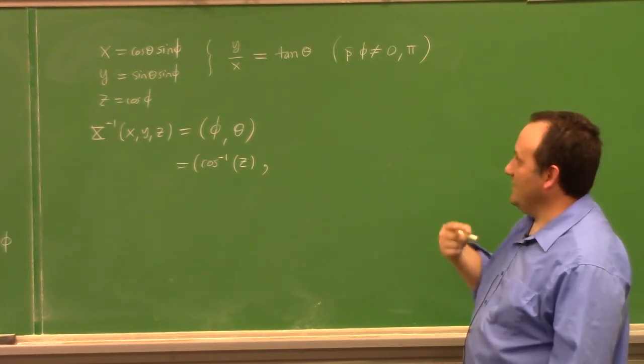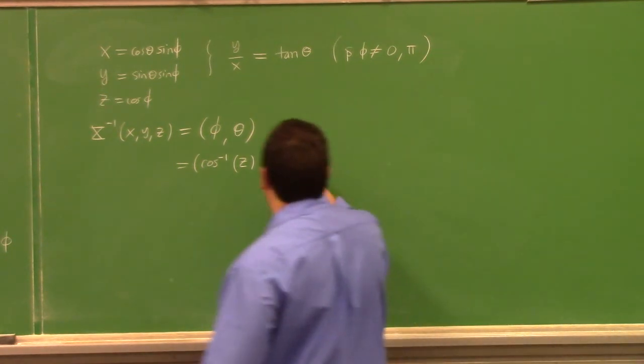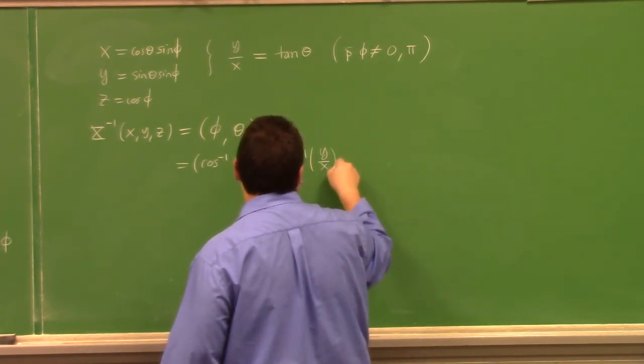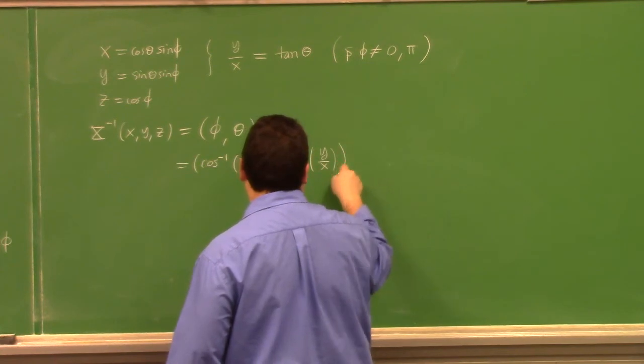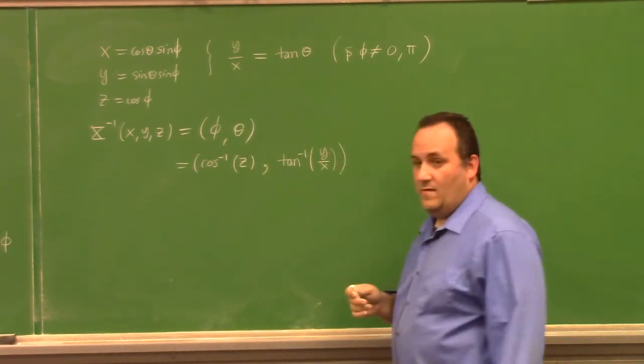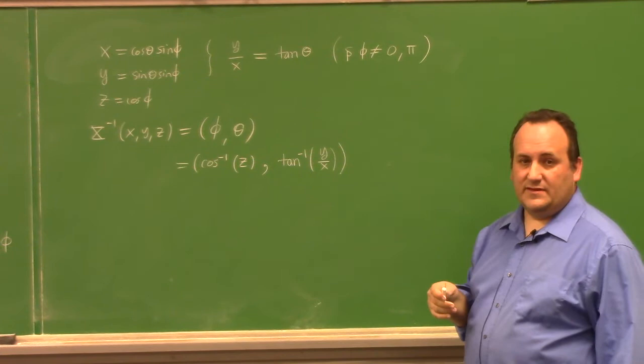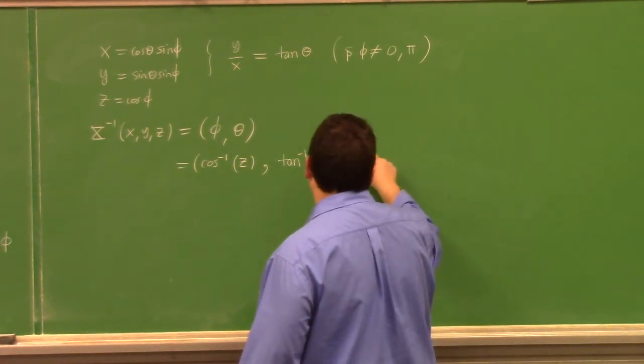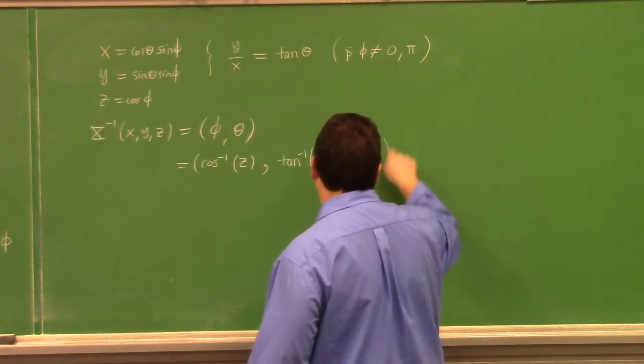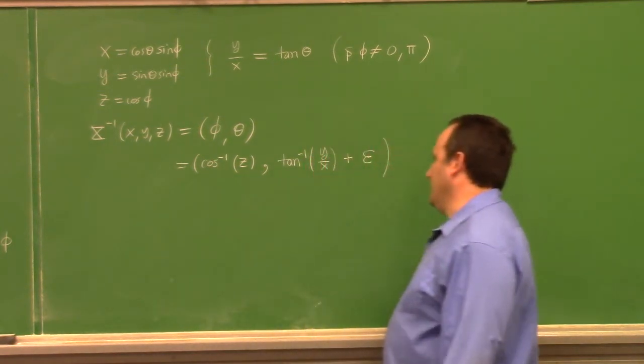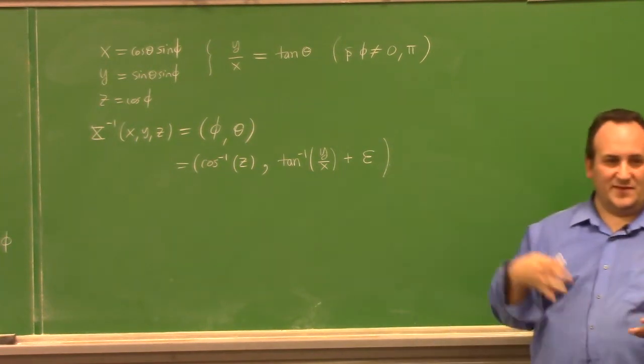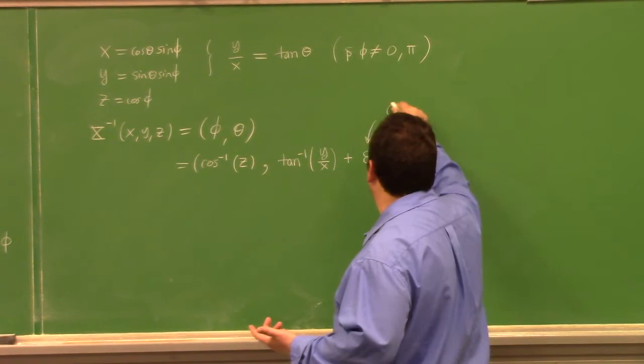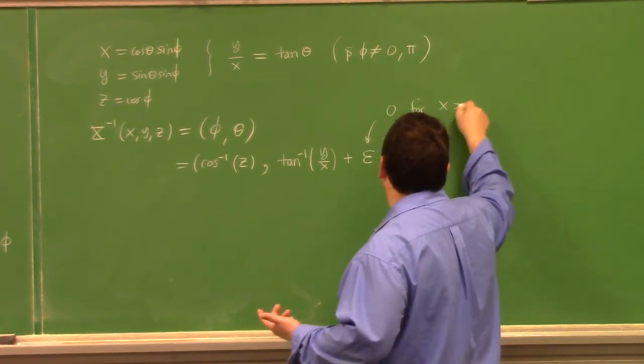So then you say theta is inverse tangent y over x and that'll be okay except when it's not, right? Because you really have to add some function over here, epsilon. How does epsilon work? Epsilon is equal to zero when x is greater than zero, right?